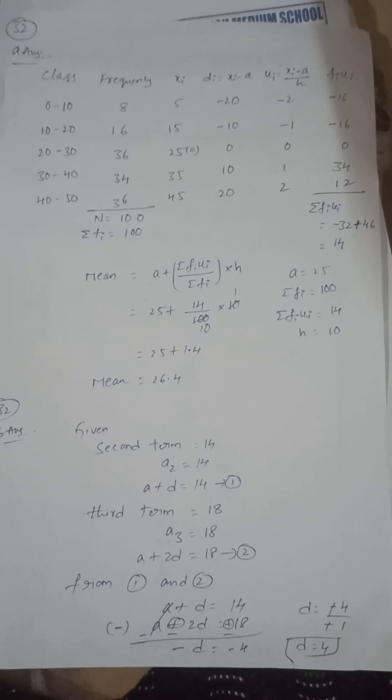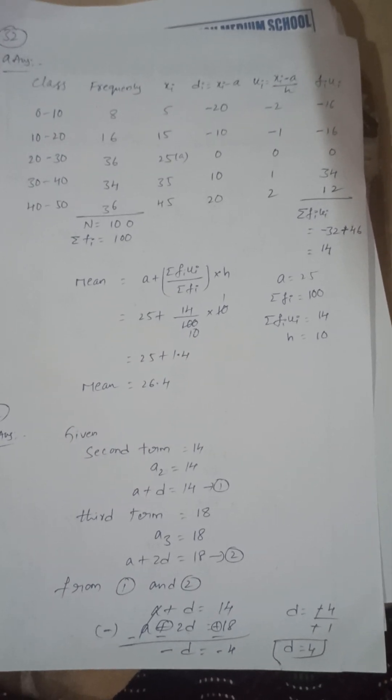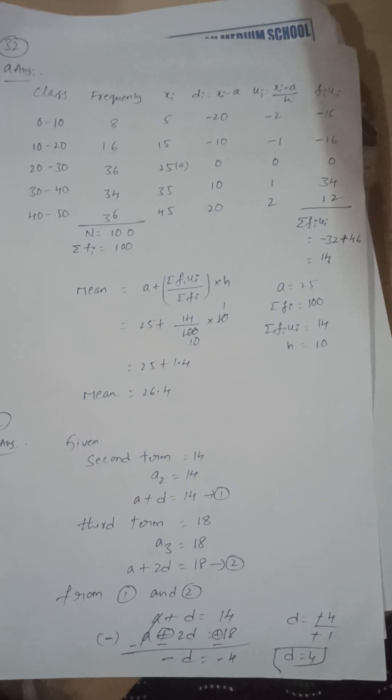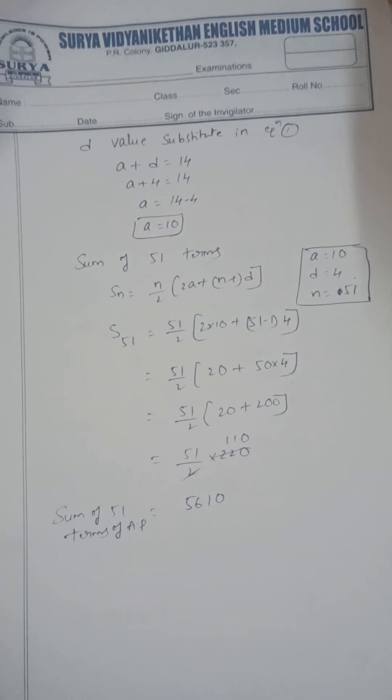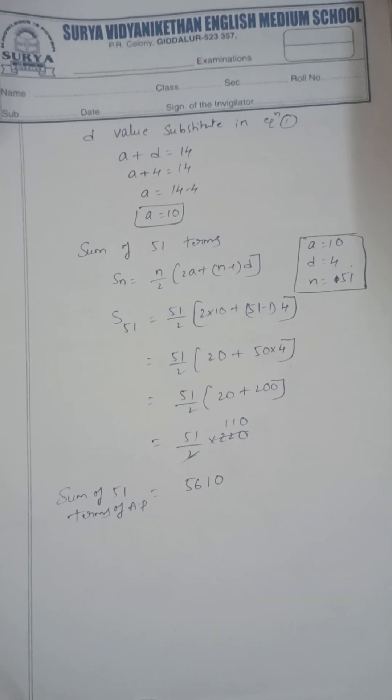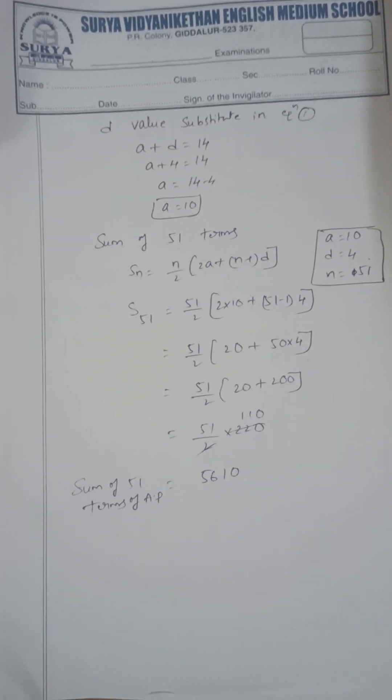Next, 32b: second term is 14, third term is 18. Second term is A plus D, third term is A plus 2D. From this, D is equal to 4, A is equal to 10. So sum of 51 terms: Sn is equal to n by 2 of 2A plus n minus 1 into D. That is 5610.